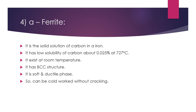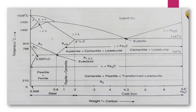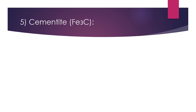Alpha ferrite has low solubility of carbon, about 0.025% at 727°C. It exists at room temperature, has a body-centered cubic structure, and is a soft and ductile phase, so it can be cold worked without cracking. This is your alpha ferrite region. The dotted line here represents that alpha ferrite exists down to room temperature.